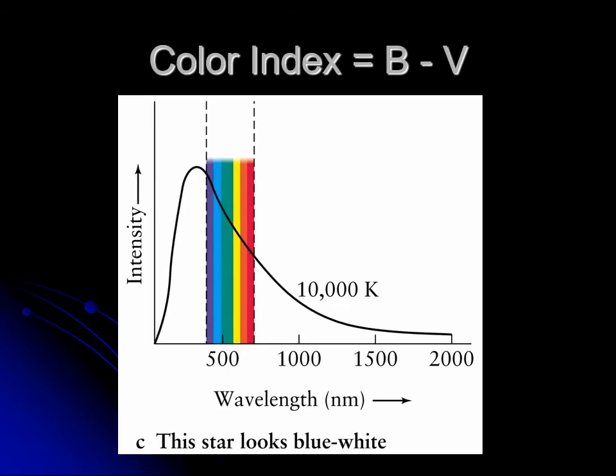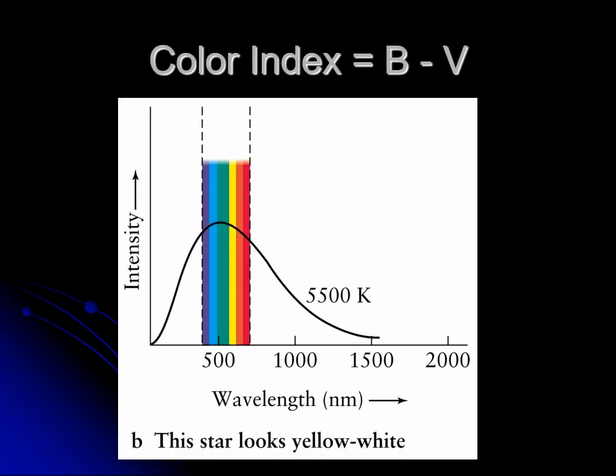In this case, you have a star that's peaking in the ultraviolet, but it gives off way more blue light than red light. And so this star is going to look bluish to you when you look at it. If you use the B magnitude and the V, it's brighter in blue, but brighter means smaller number. So small number minus bigger number means that B minus V is less than zero. So this star will have a color index that is negative.